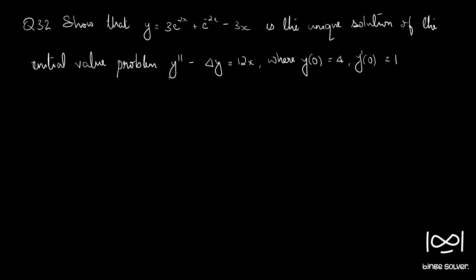We are given a differential equation with some initial values, and we need to see whether this relation is a solution — not just a solution, but whether it is the unique solution to this initial value problem. First, we will see whether, on substitution into the differential equation, this relationship reduces the equation to an identity. If that is the case, it is a solution. Then we will check whether the equation satisfies the initial values, and we will use the uniqueness theorem to confirm it is a unique solution.